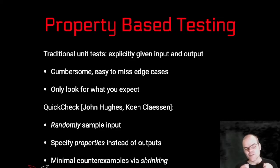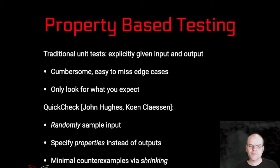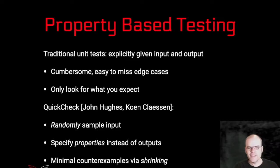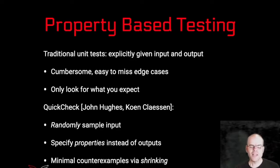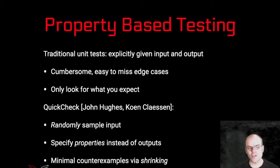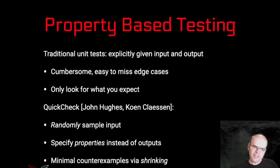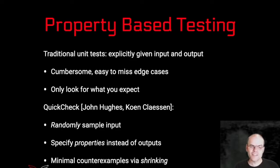If you think of enough properties, you can check many aspects of your program without knowing exactly what the output should be for any given input, because you want to randomly sample the input. You specify those properties and then verify that they are satisfied for arbitrary input. That's quite a powerful concept, because you don't have to think of all the special edge cases — you have to write your generators in a way that they more or less exhaustively probe your parameter space, which is easier than thinking of every individual edge case.